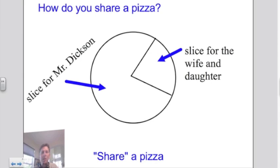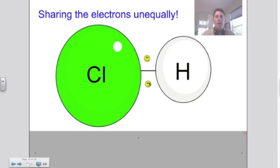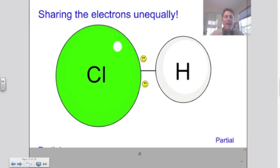The same thing happens as we look at atoms. We can share electrons unequally. Here I have chlorine and hydrogen — they're sharing the electrons in between. As it turns out, the chlorine atom wants the electrons more than hydrogen does. So when they share the electrons, we'll find the electrons closer to chlorine than to hydrogen. What ends up happening then is I have more electrons found over on this edge.